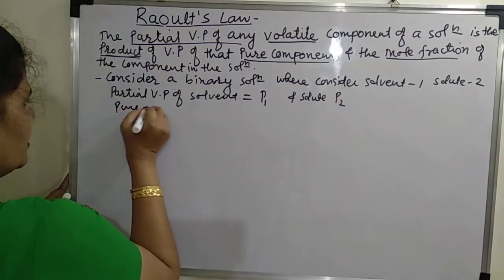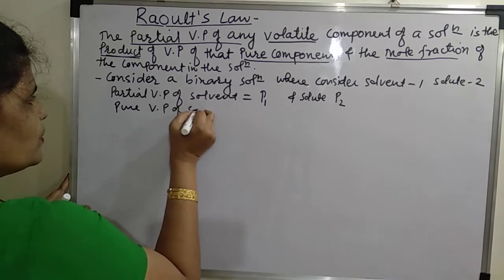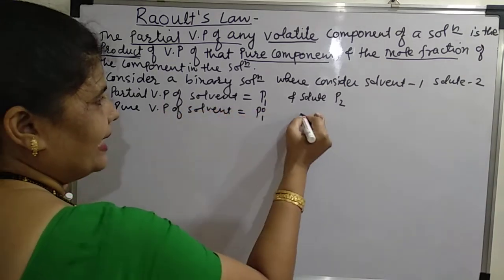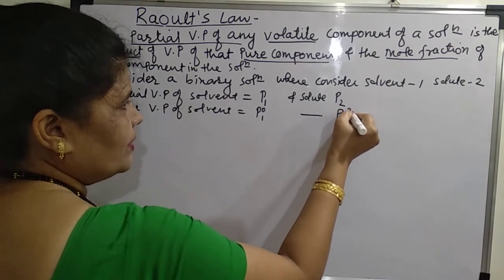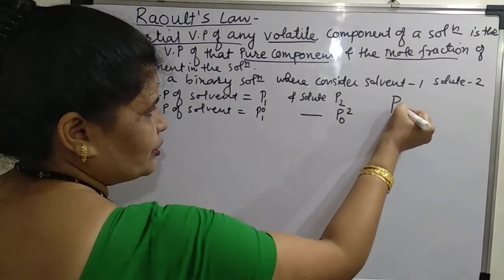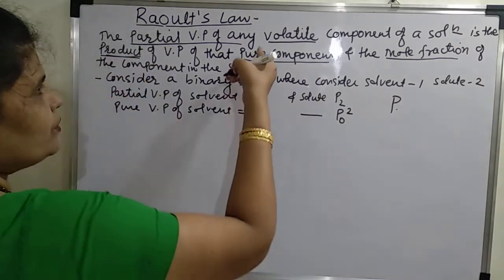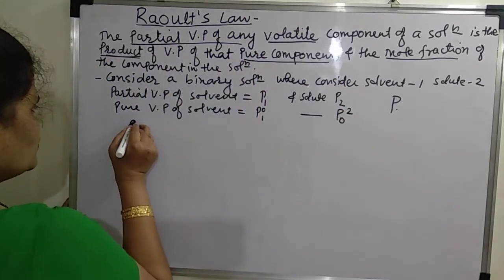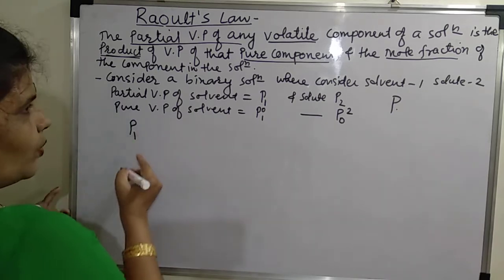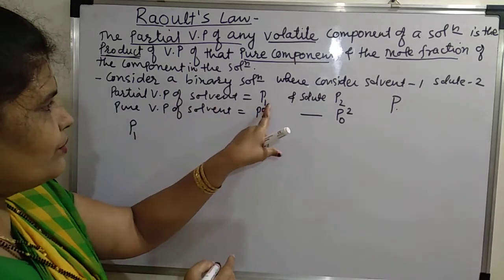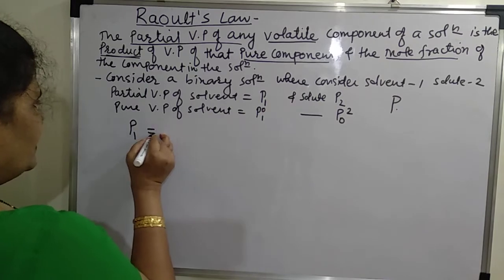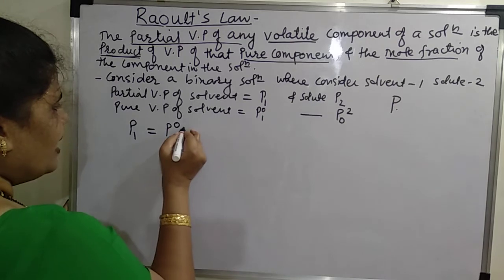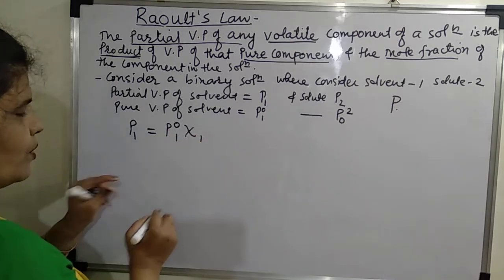Similarly, the pure vapor pressure of the solvent is P01 and that of the solute will be P02. According to Raoult's Law, the partial vapor pressure of the solvent, P1, is equal to the product of the pure component vapor pressure P01 and its mole fraction X1 in the solution. This is equation number one.